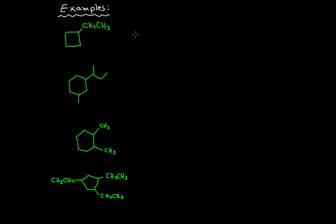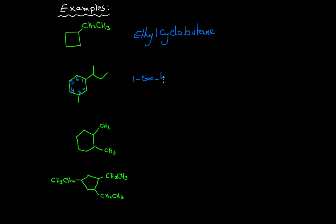So the first one, the name would be ethyl cyclobutane. For the second one, the numbering would be 1, 2, 3, 4, 5, and 6, and the name would be 1-sec-butyl-3-methyl...